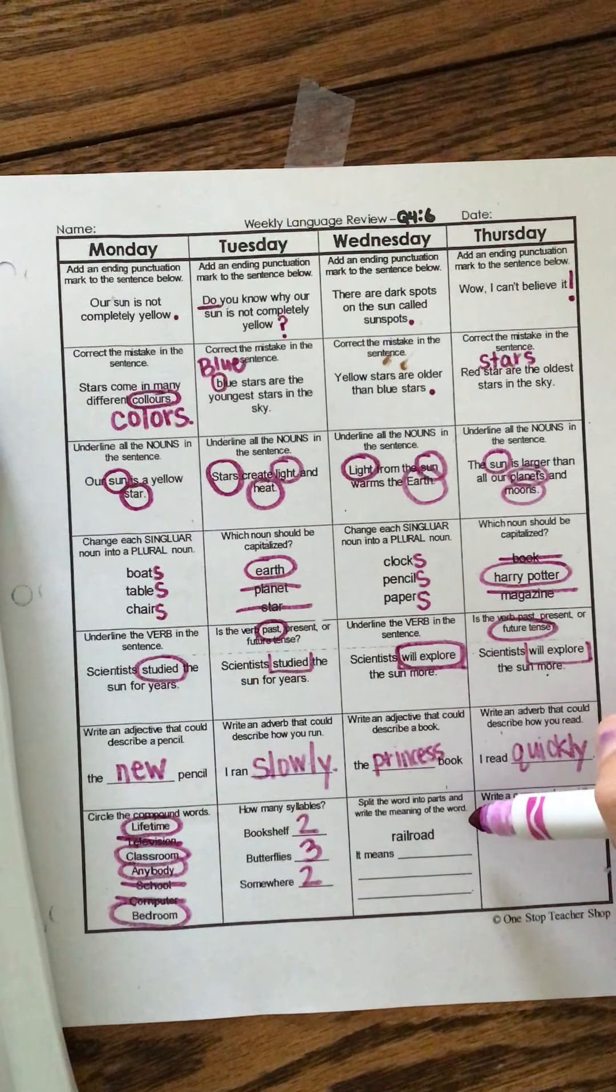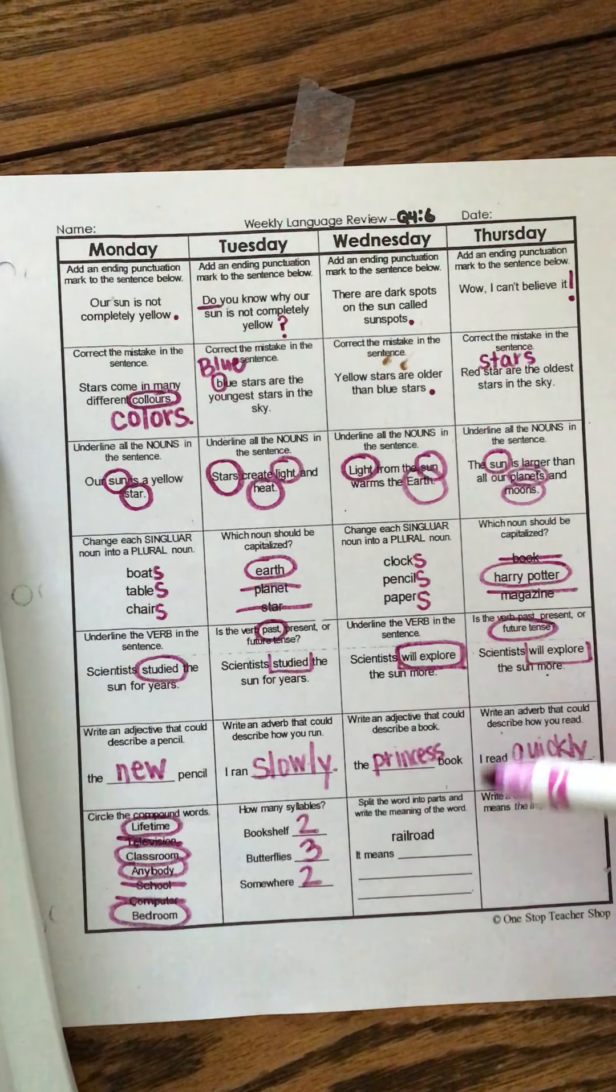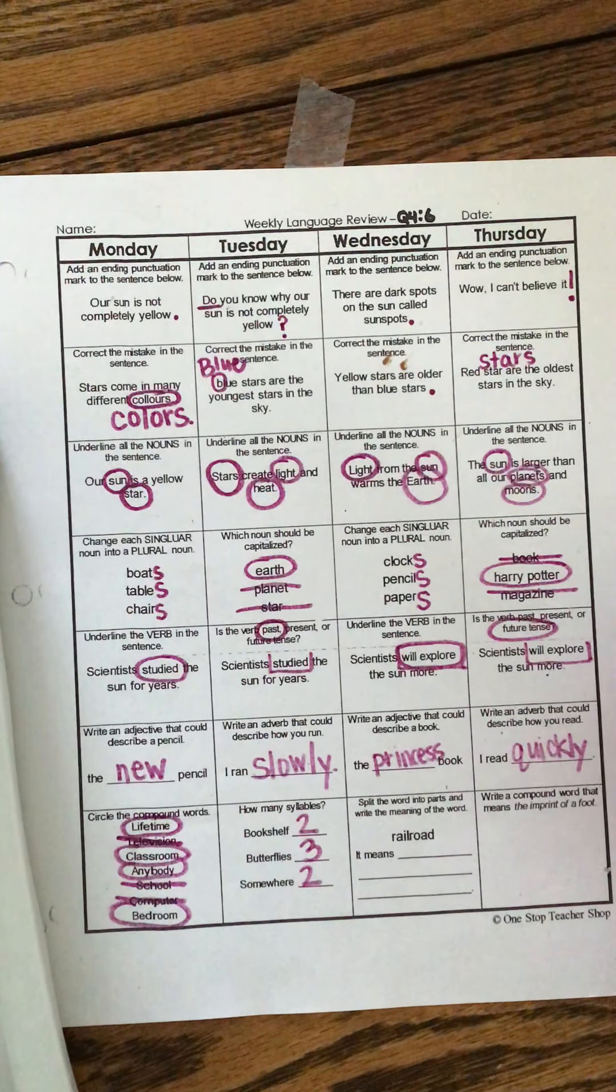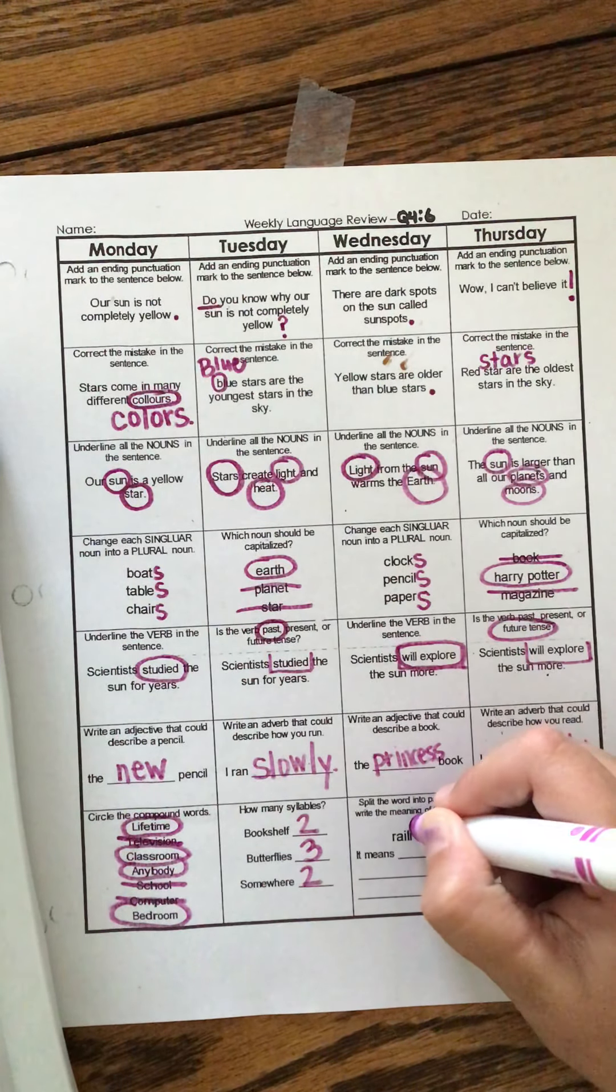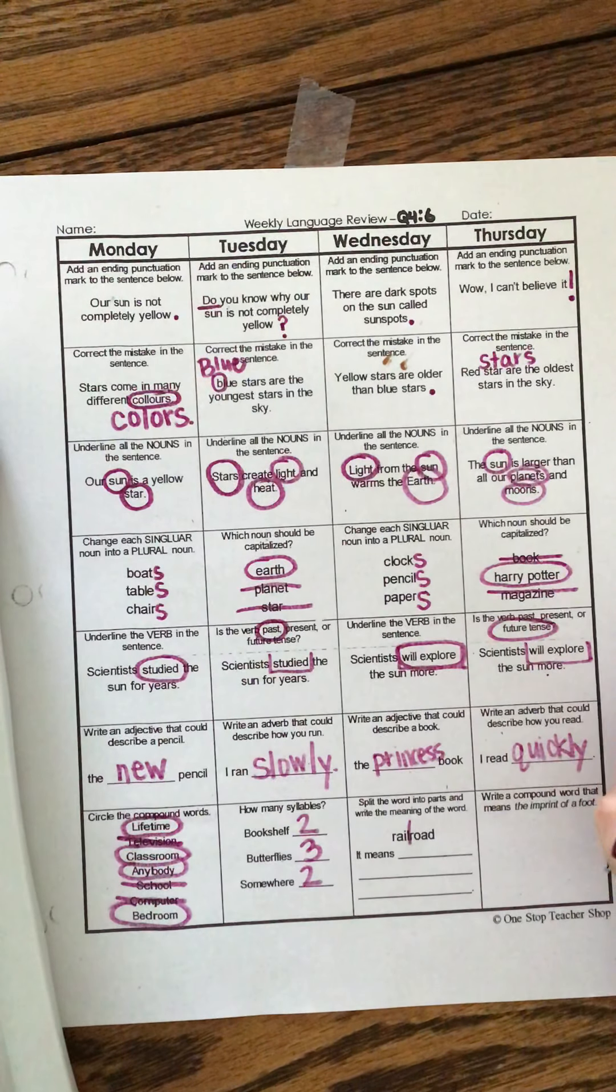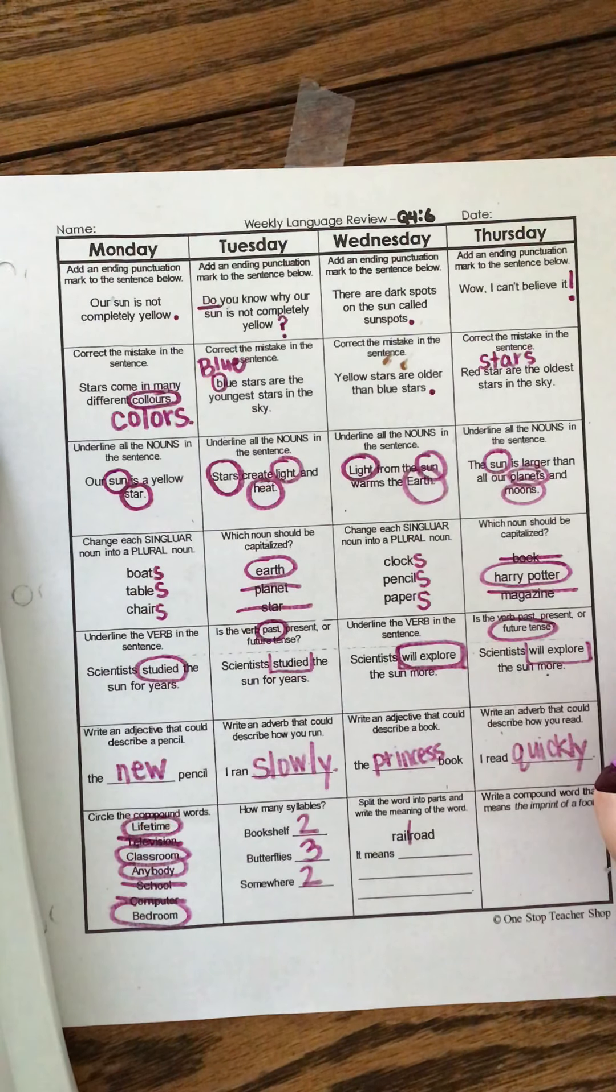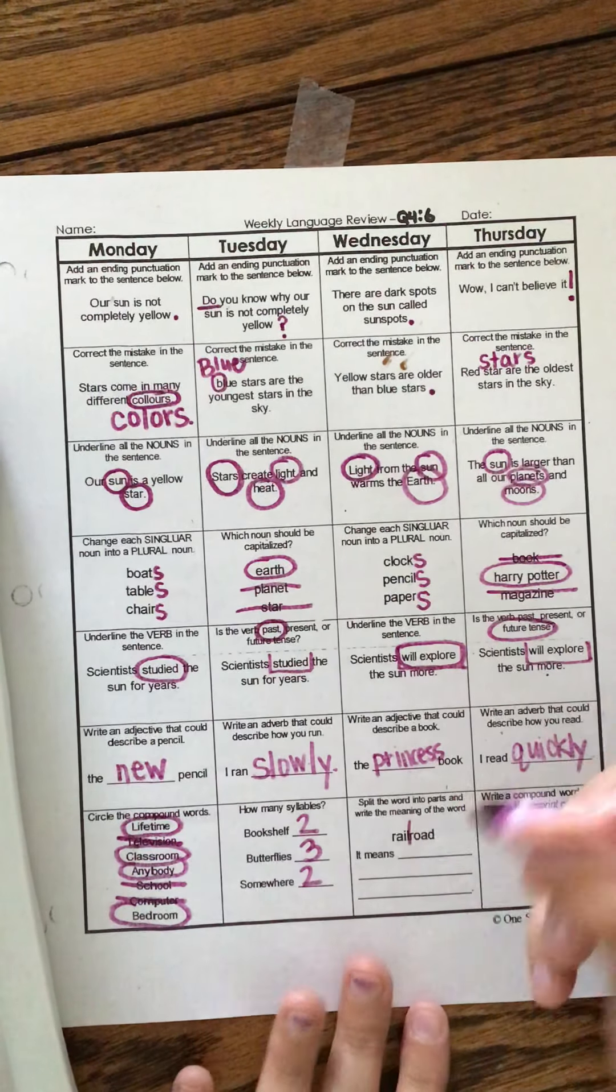Split the word into parts. Write the meaning of the word. Railroad. What are the two words that make the word railroad? A rail and a road. And it means a road of rails. Good.